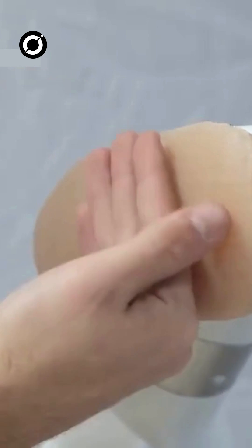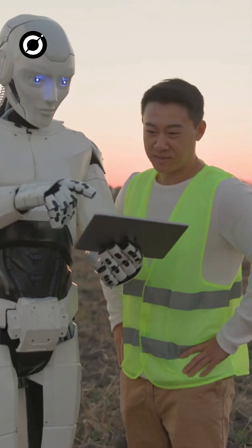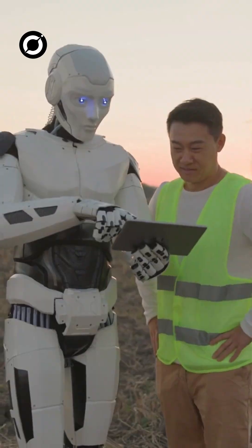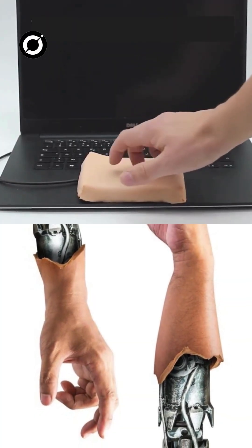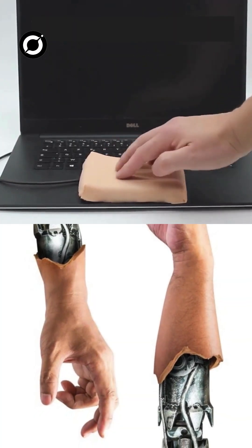While still in development, this artificial skin marks a major step toward robots that interact safely and intuitively with humans. Future improvements may include even finer sensitivity and self-healing properties, making robots more lifelike than ever before.